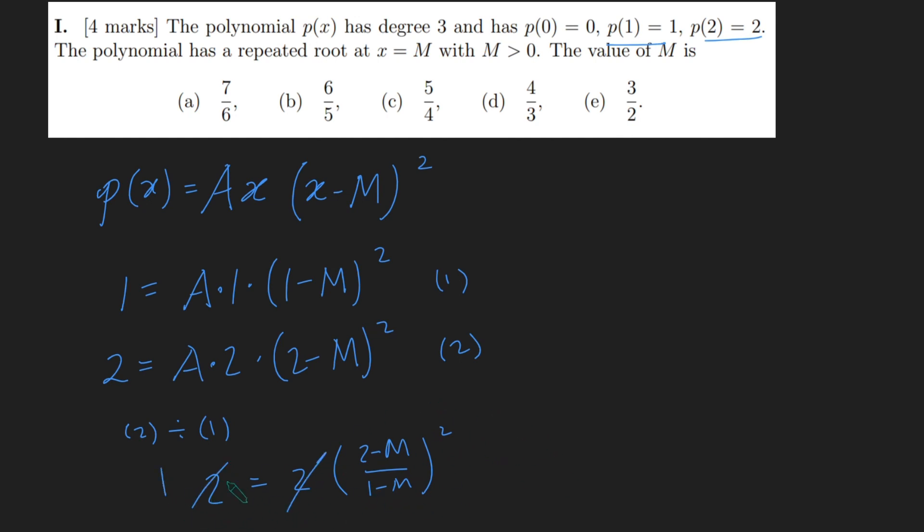Cross multiplying I get 1 minus M squared equals 2 minus M squared. Expanding this gives me 1 minus 2M plus M squared equals 4 minus 4M plus M squared. The M squareds cancel, which is quite nice. And rearranging this gives us 2M equals 3, and so M equals 3 over 2. And so our answer is option E. That's how we solve this problem.